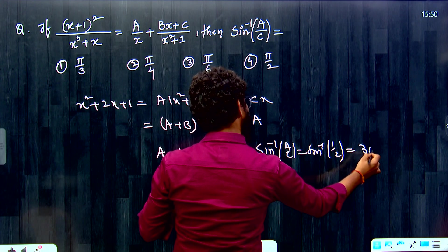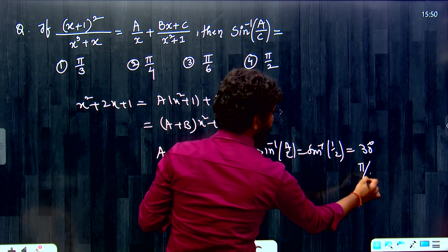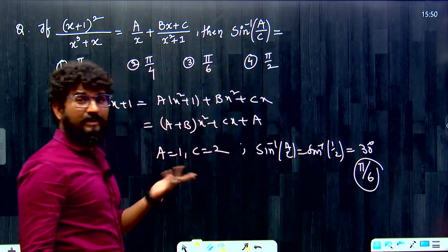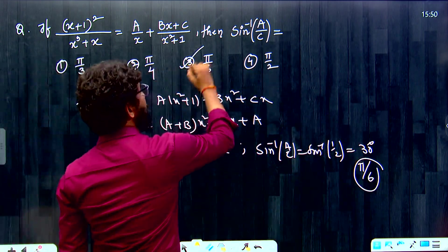Sine of 1 by 2, approximately 30 degrees or pi by 6 radians. You can say either one. That is our answer. That is it. Thank you very much.